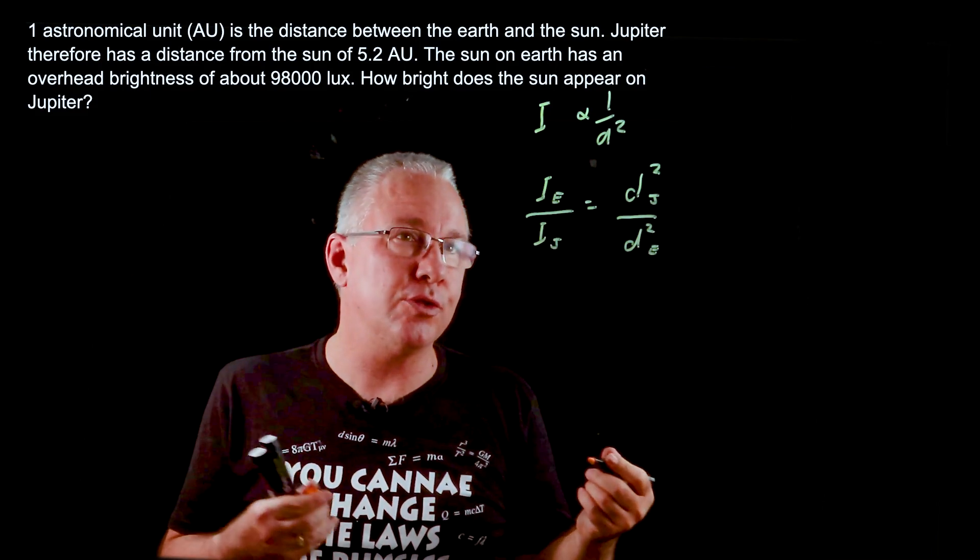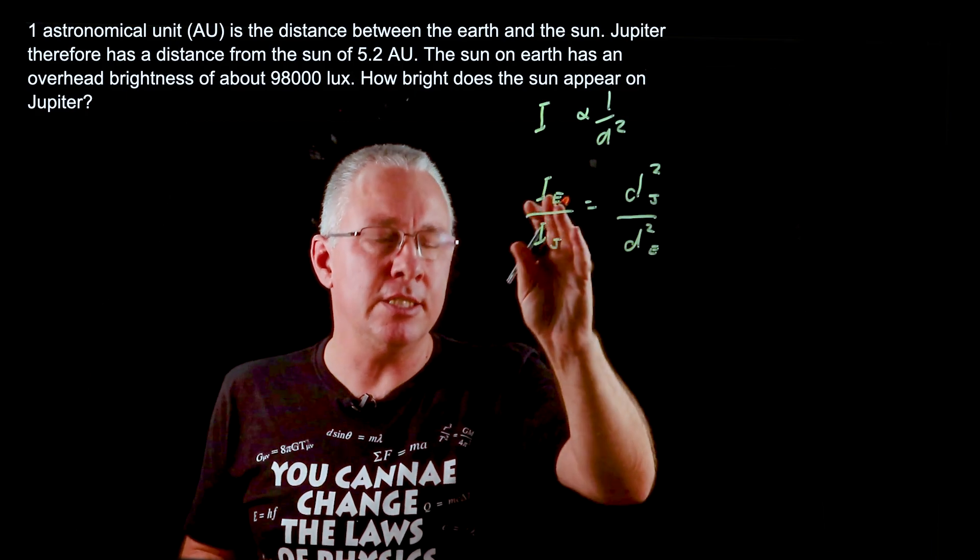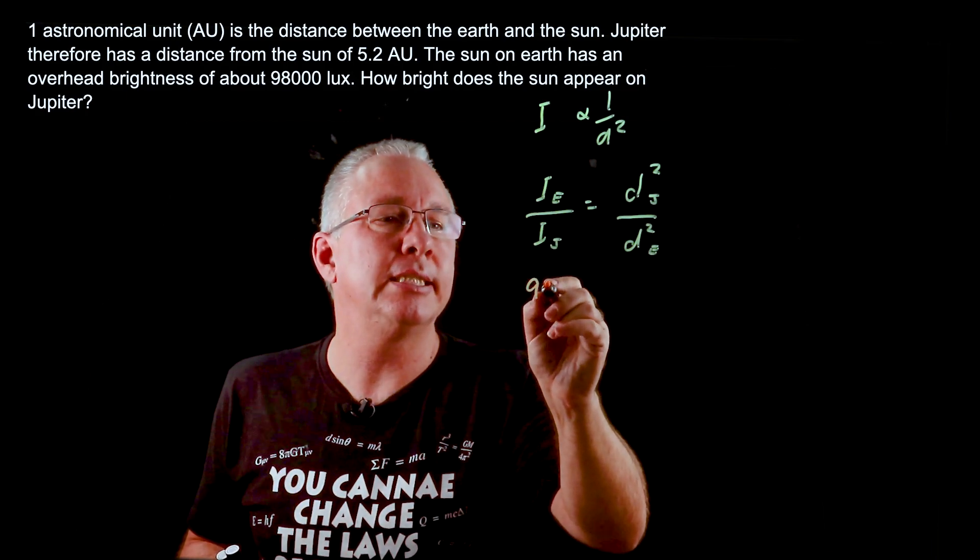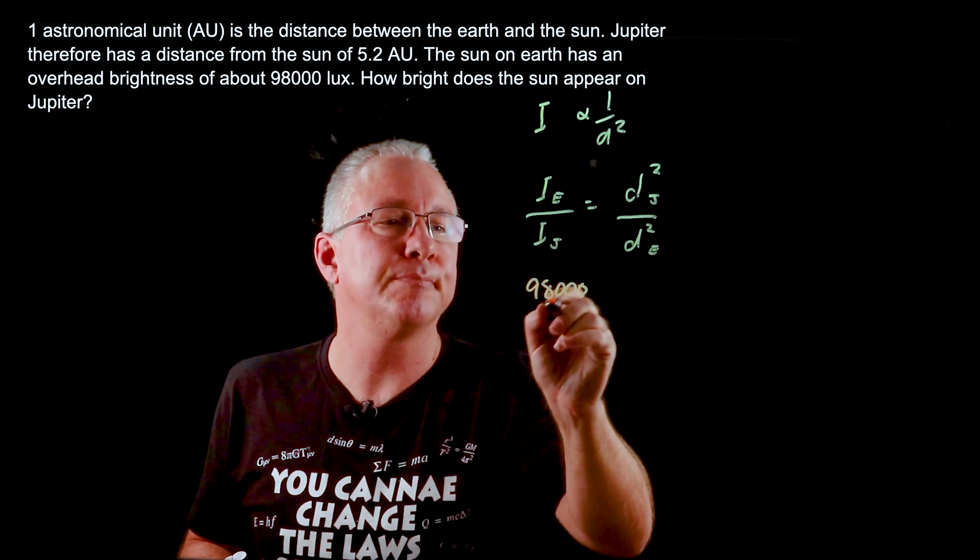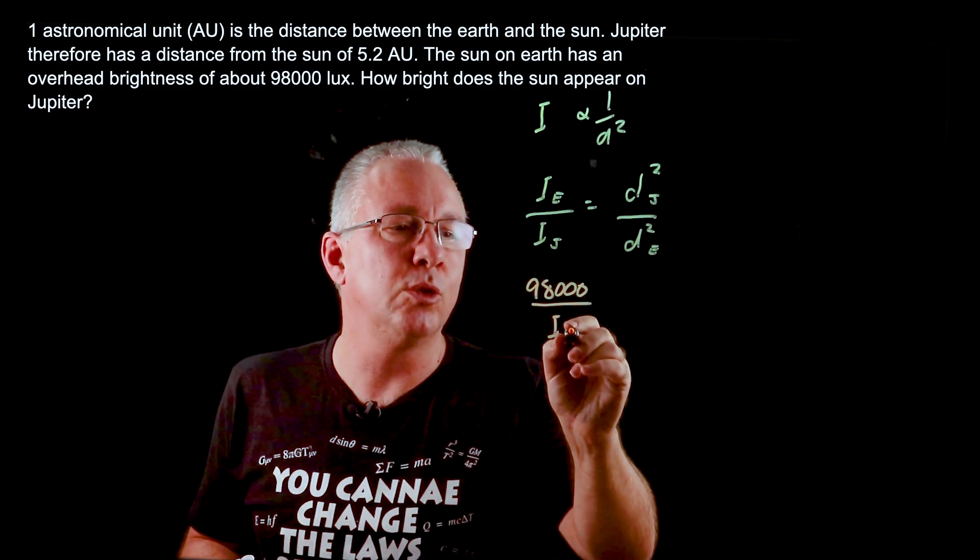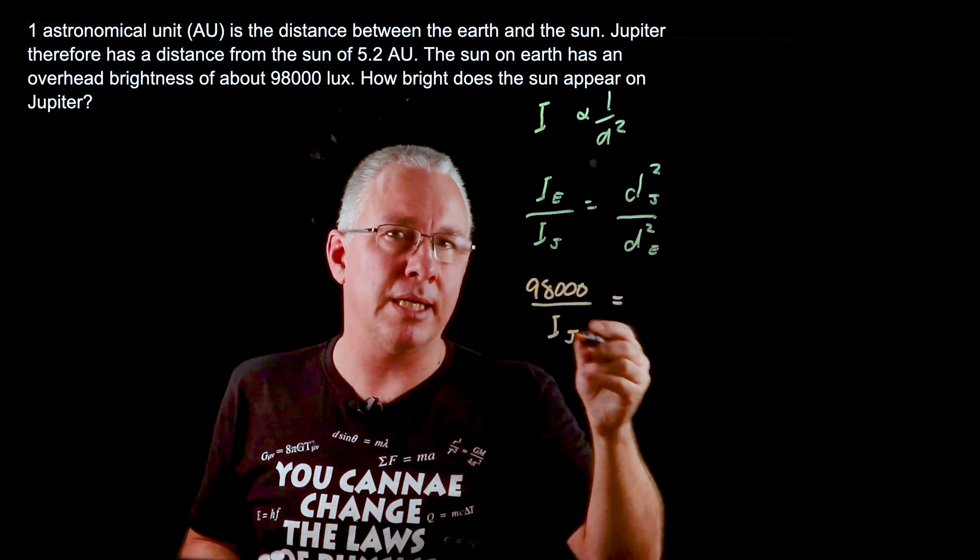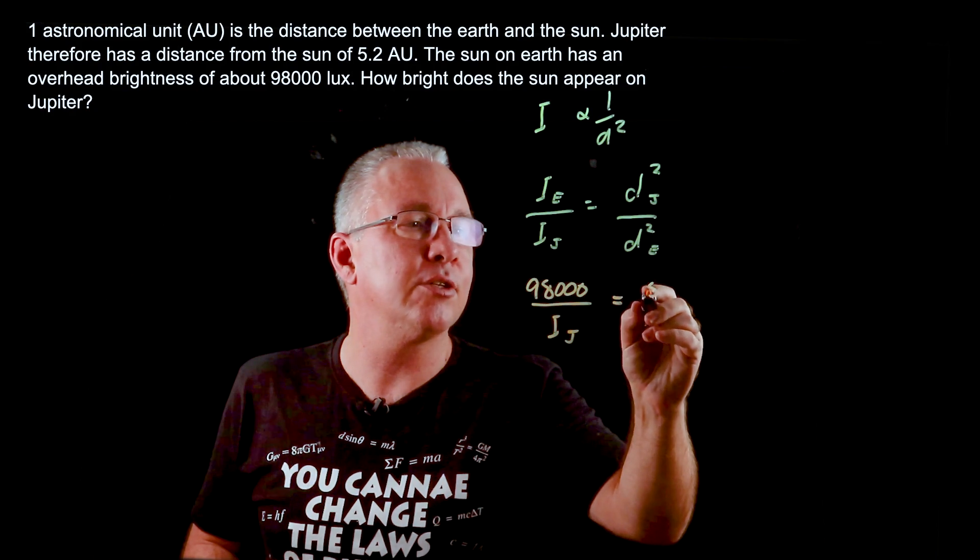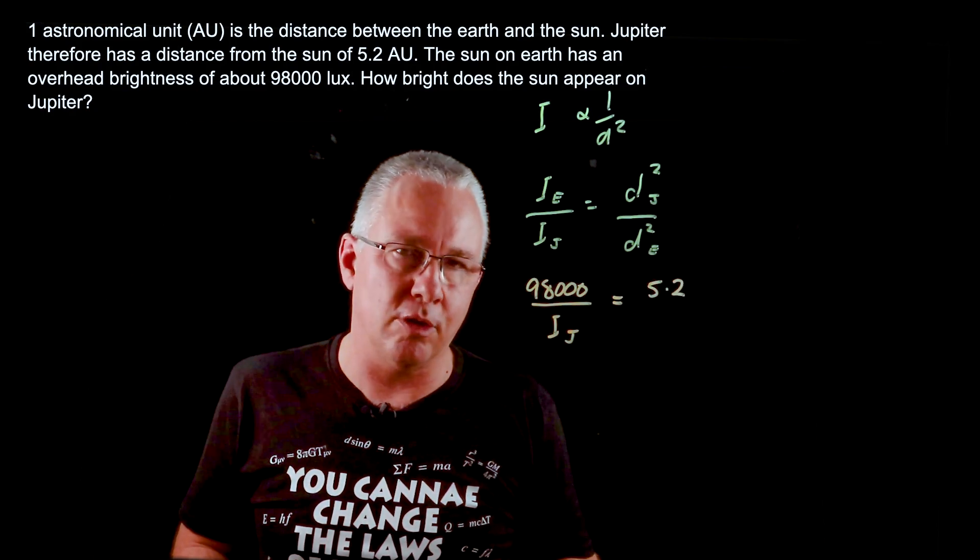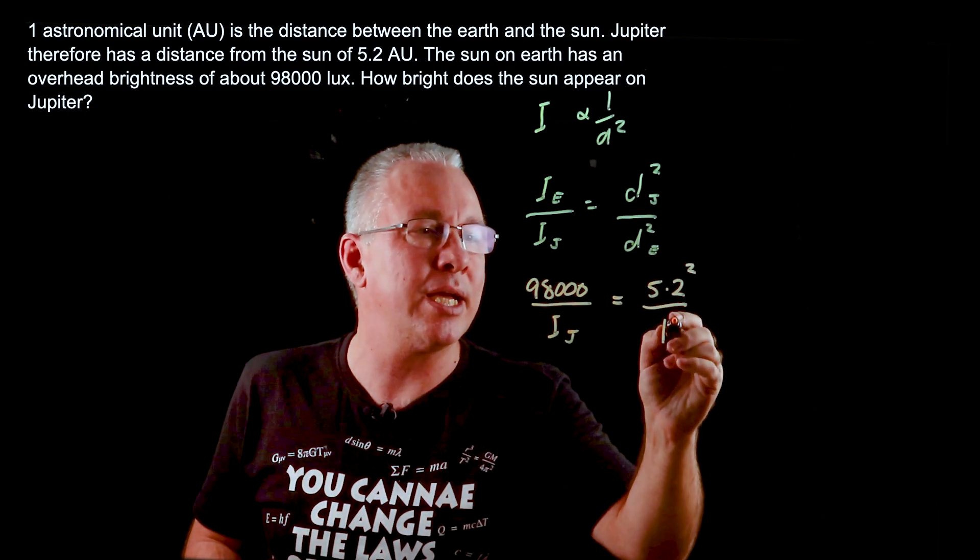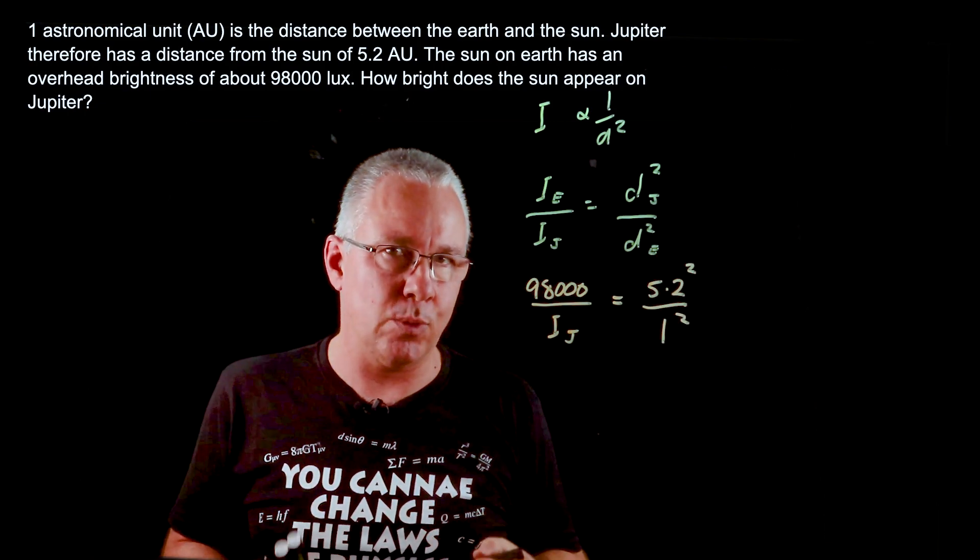So what we now do is substitute our values in. The intensity of the Earth is given and in this case the intensity is equal to 98,000 lux, and of course this is what we're looking for for Jupiter. Now the distance of Jupiter is in astronomical units and we're told that it is equal to 5.2 astronomical units compared to the one on Earth, but of course this is squared, both of those are squared.